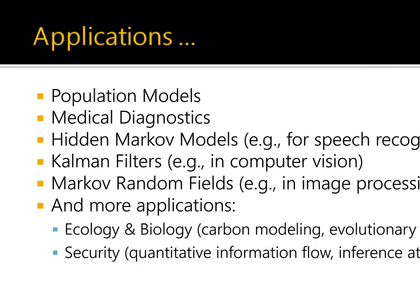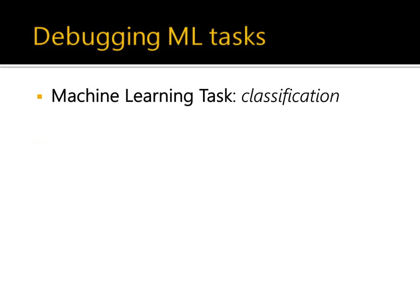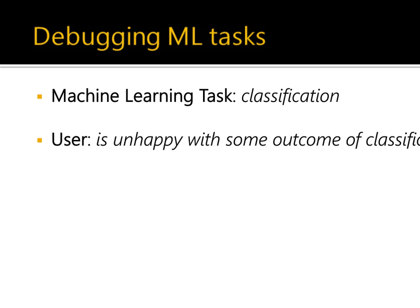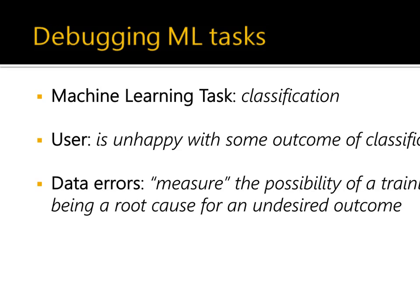That was one instance of using program analysis ideas for efficient inference in probabilistic programs. There are many interesting applications for probabilistic programming across diverse domains. In the next part of the talk, I will describe a new application: using probabilistic programming for debugging machine learning tasks. Specifically, we will look at classification, where the objective is to learn a classifier from training data that distinguishes positive from negative examples. We consider a user who is unhappy with some classification outcome and are interested in finding errors in the training data responsible for that undesired outcome.